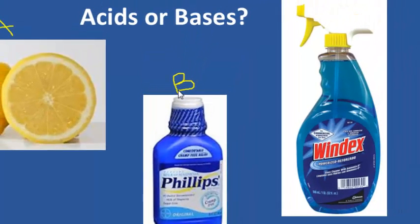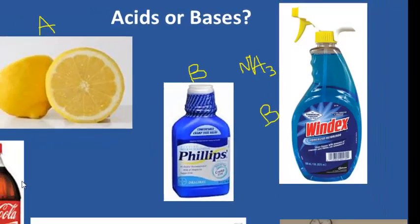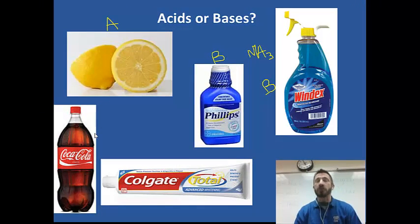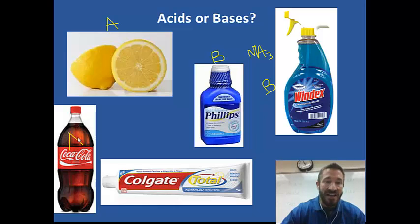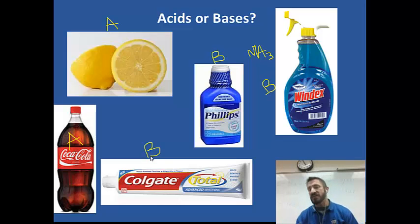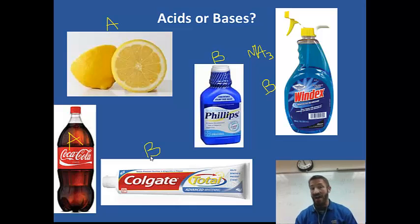Next we have Windex. There's something in Windex that makes it either an acid or base — that is ammonia, NH3. Carbonated beverages are carbonated, and they contain something called carbonic acid, so things like that would definitely be an acid. And anything considered like a soap would be slippery, so we call that a base.